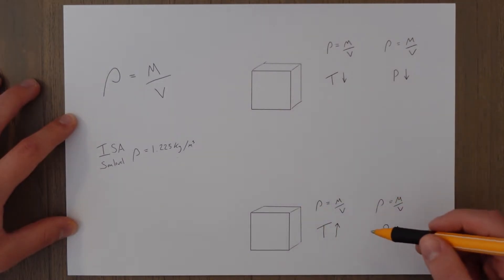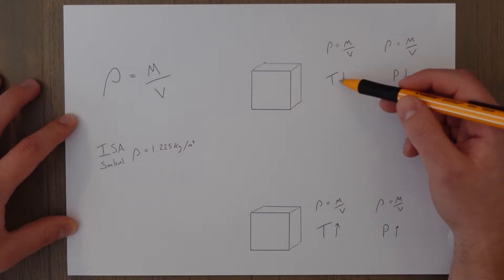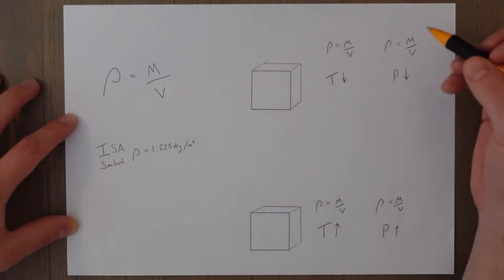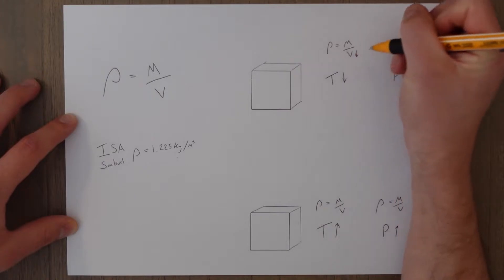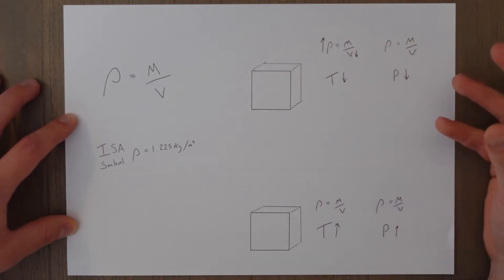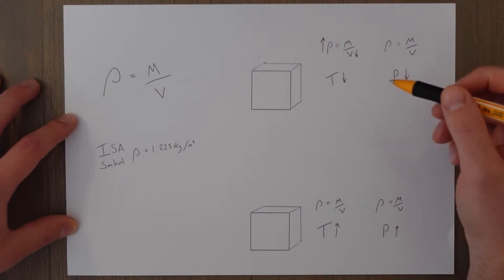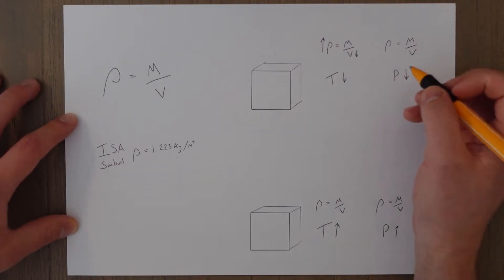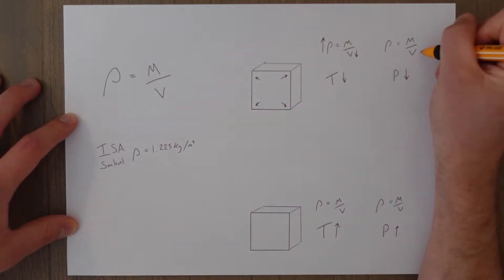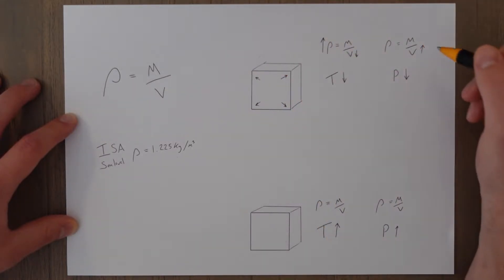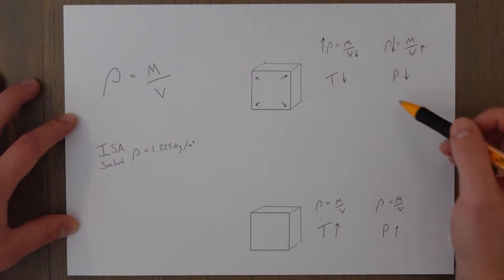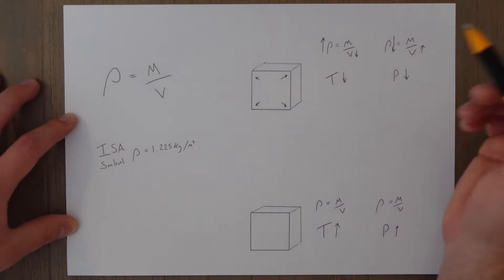In the atmosphere, as we climb, we know that our temperature reduces, which causes the air to compress slightly. So if we look at our formula, the value for volume would go down, which would send the density up. But this isn't what actually happens in the real world, because the atmospheric pressure is also reducing as we climb. As the pressure reduces, the air starts to expand, meaning the volume actually increases. So we're dividing by a larger number, and therefore the density reduces. Basically, the pressure has a larger effect on what happens to the density than the temperature.